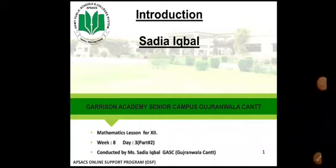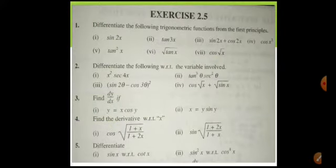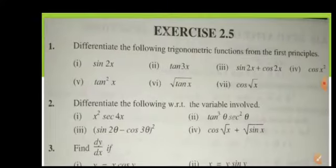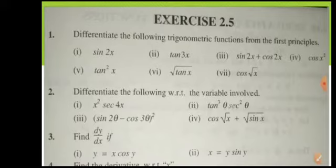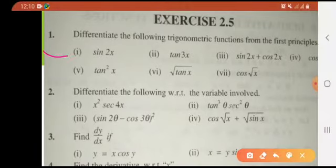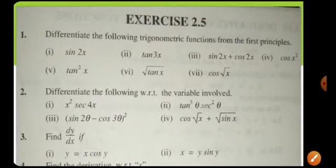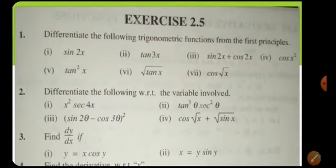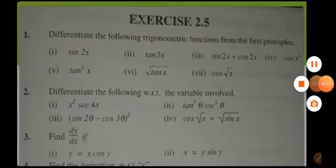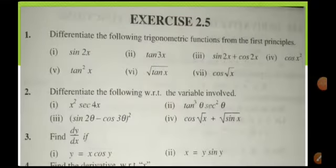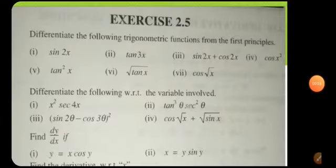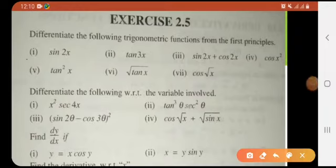Bismillahirrahmanirrahim, Assalamu Alaikum dear students, welcome back. This is the second part. If you remember, we were left with question number one of exercise 2.5. The question is: differentiate the following trigonometric functions by first principle, also known as the ab initio method or by definition.